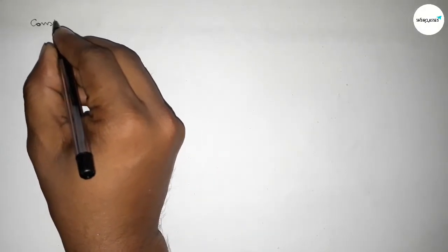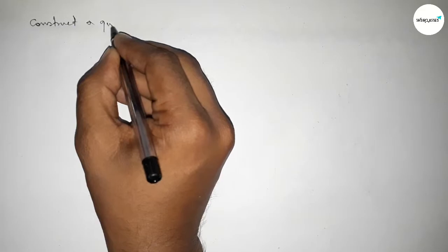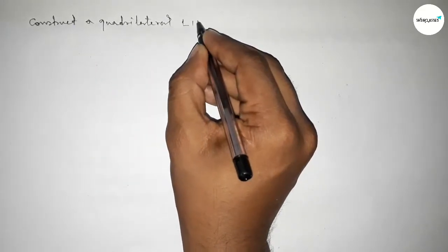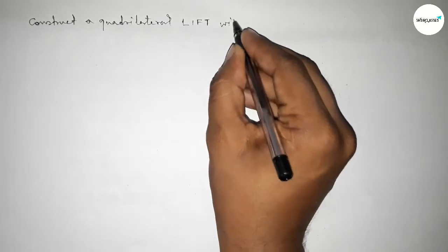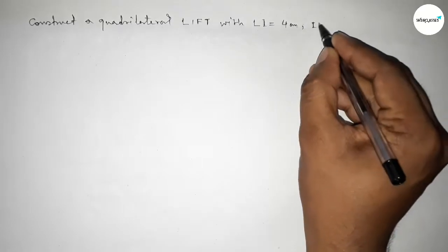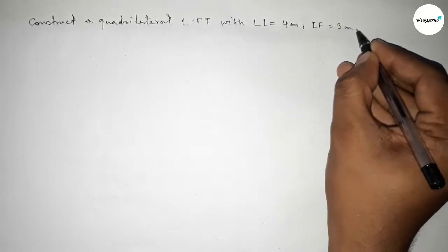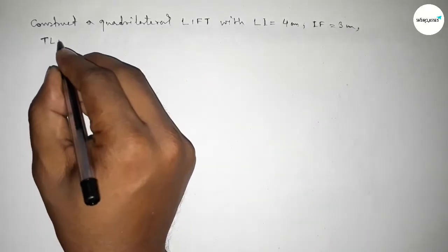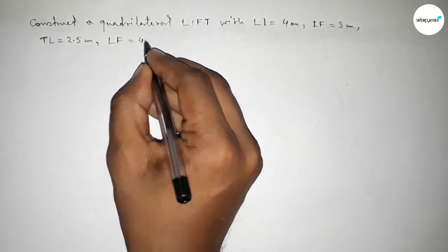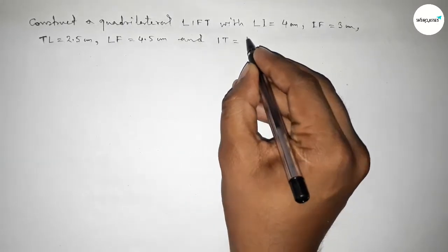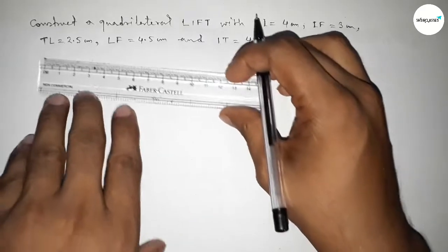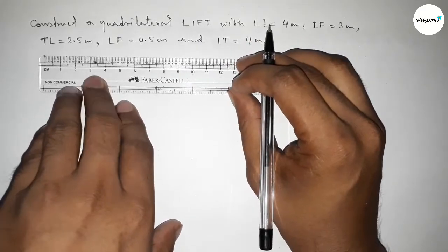Hi everyone, welcome to Siser Classes. Today in this video we have to construct a quadrilateral LIFT with LI equal to 4 centimeter, IF equal to 3 centimeter, TL equal to 2.5 centimeter, LF equal to 4.5 centimeter, and IT equal to 4 centimeter. So let's start the video. First of all, we have to draw here all the sides.